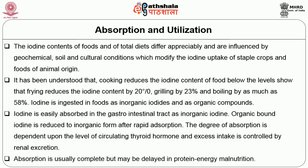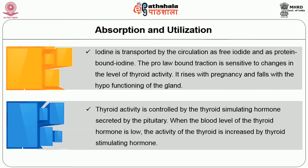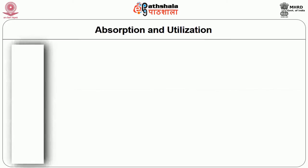Absorption is usually complete but may be delayed in protein energy malnutrition. Iodine is transported by the circulation as free iodide and as protein-bound iodine. The protein-bound fraction is sensitive to changes in the level of thyroid activity. It rises with pregnancy and falls with the hypo-functioning of the gland. Thyroid activity is controlled by the thyroid stimulating hormone secreted by the pituitary. When the blood level of thyroid hormone is low, the activity of the thyroid is increased by thyroid stimulating hormone.